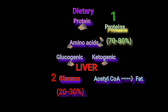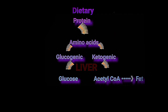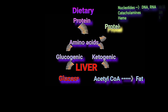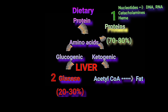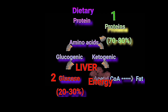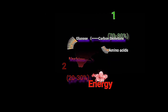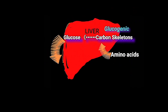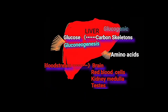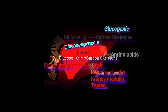Dietary proteins are an important source of amino acids, primarily used to rebuild cellular proteins as well as synthesize specific molecules like nucleotides, catecholamines, hemes, and other nitrogen-containing molecules. Excess dietary amino acids can be used as a source of energy through their catabolism to produce carbon skeletons.